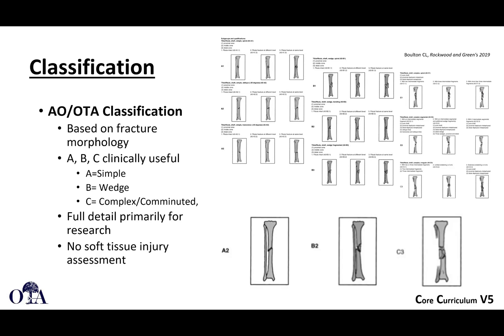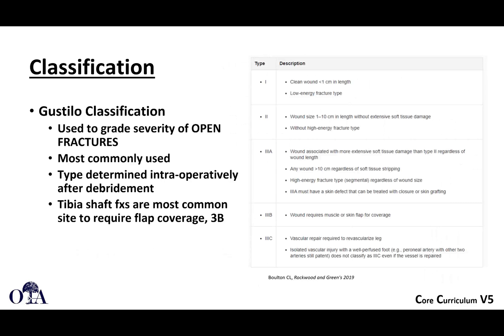For classification, you can use the AO/OTA system, which is a universal classification based on fracture morphology. The tibia is bone number four, so the tibial shaft would be 42, with subtypes A, B, and C. It does not take into account whether the fracture is open or closed. The Gustilo classification is used very frequently among orthopedic surgeons, emergency medicine, and trauma surgeons — it is essential communication. Types one, two, three, with the threes subdivided into 3A, 3B, and 3C — a classification you should certainly be familiar with.